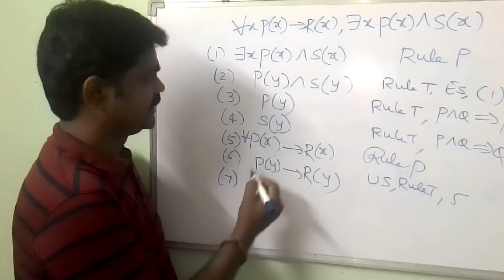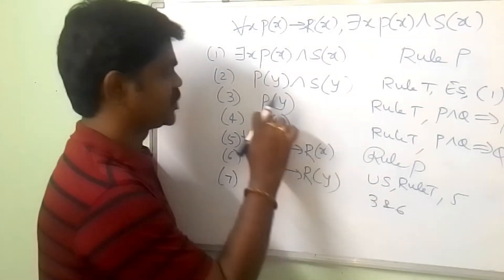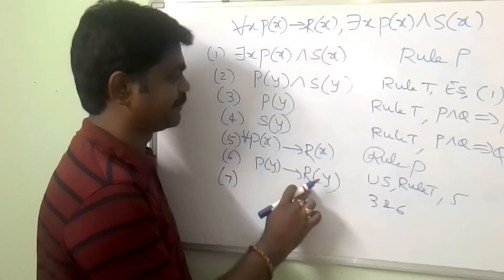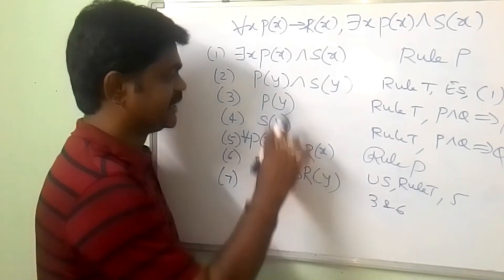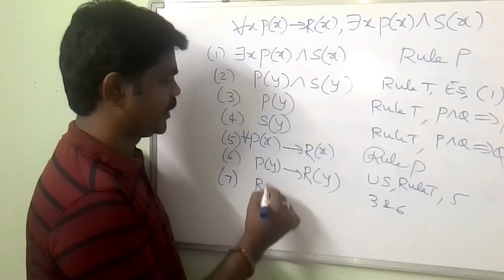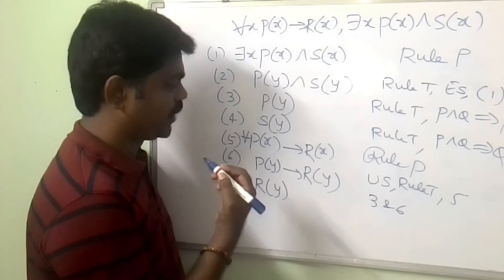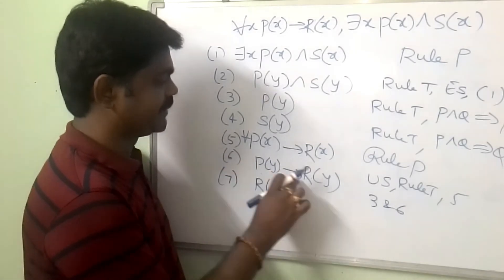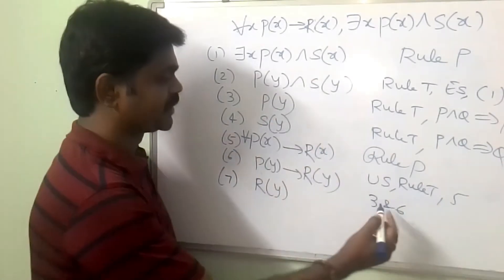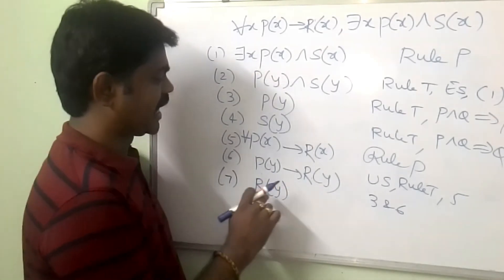If you take step 7 from steps 3 and 6: I have P of Y here, and I have P of Y implies R of Y. From these two I may get R of Y. So P of Y implies R of Y, and P of Y — from steps 3 and 6 — I will get R of Y.